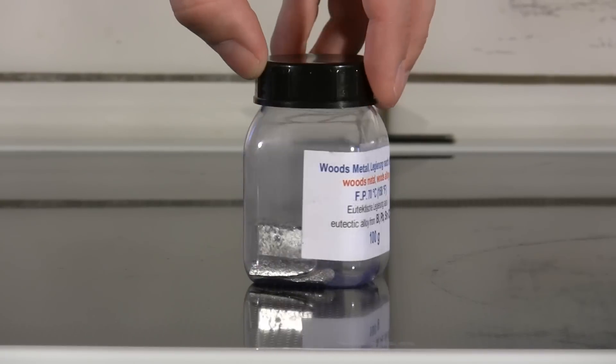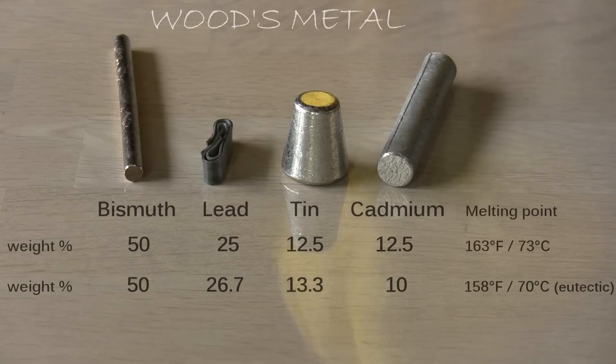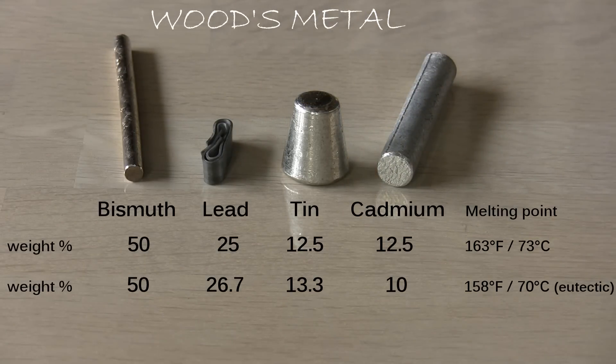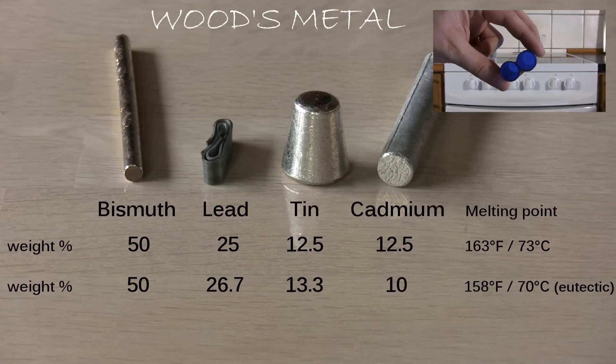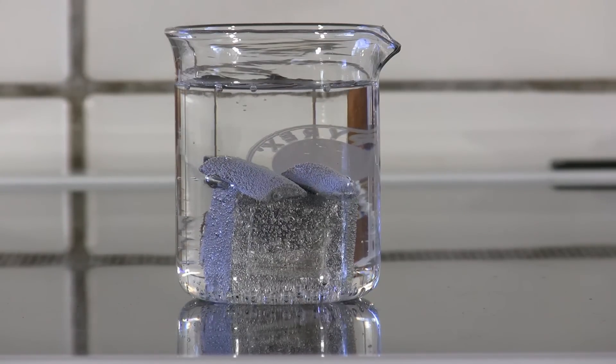This is Wood's metal. It's similar to Rose's metal except that half of the tin is replaced by cadmium. My sample should melt at around 158 degrees Fahrenheit so I will try to cast it using a plastic cylinder. First let me give the metal a little hot tub bath in time lapse.